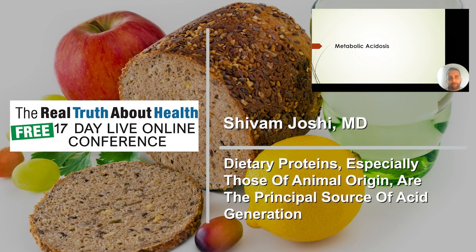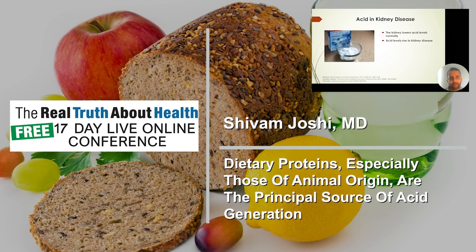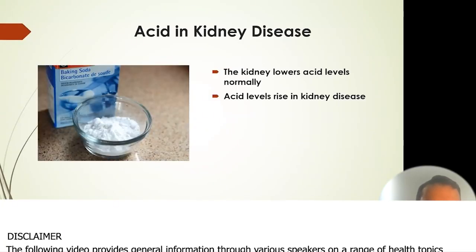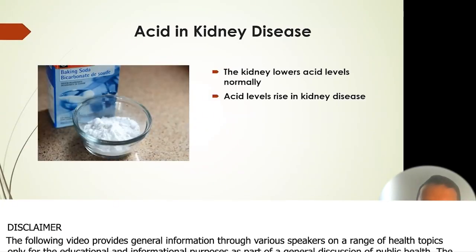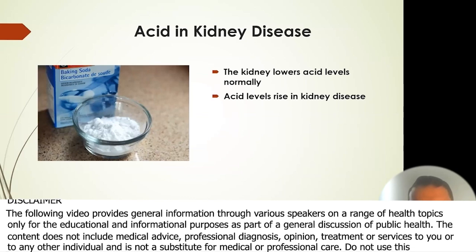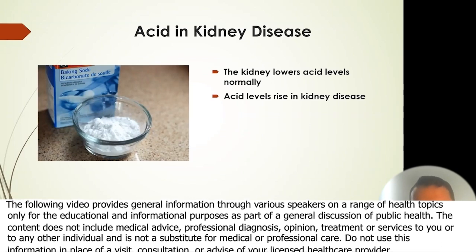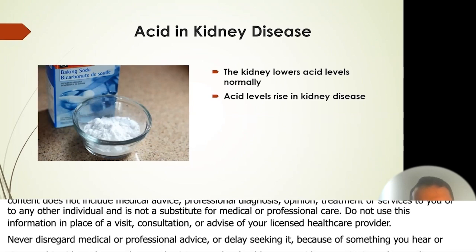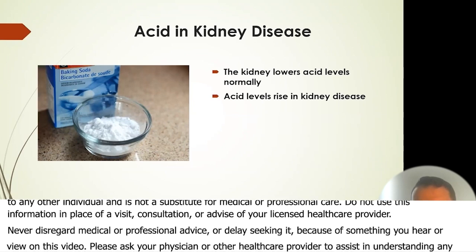Another big complication of kidney disease is metabolic acidosis. It's important to talk about — it's not commonly thought of, but I think about it a lot because it has the potential to affect the progression of kidney disease. Let me take a moment to explain this.